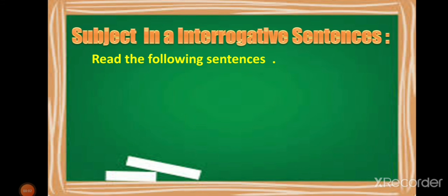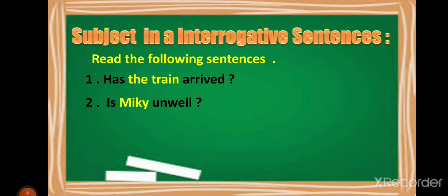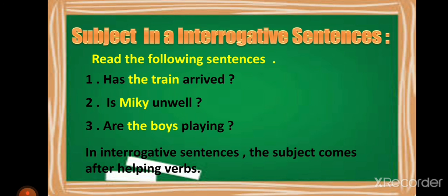Subject in interrogative sentences. Examples: 'Has the train arrived?' 'Is Mikey unwell?' 'Are the boys playing?' In the first sentence I am asking about the train, so 'the train' is the subject. 'Mikey' is the subject in the second. 'The boys' is the subject in the third. In interrogative sentences, the subject comes after the helping verbs — has, is, are.